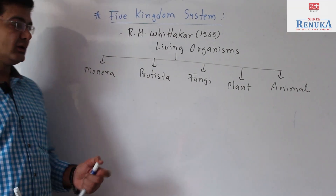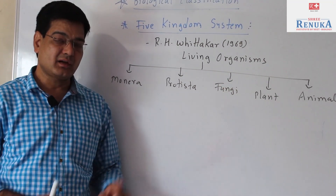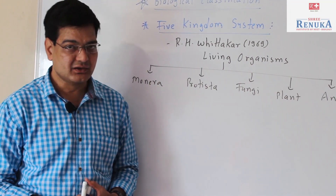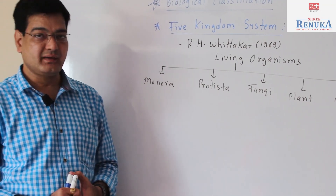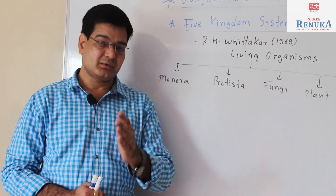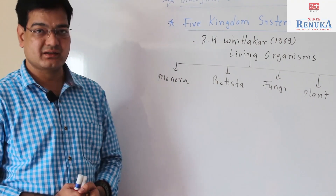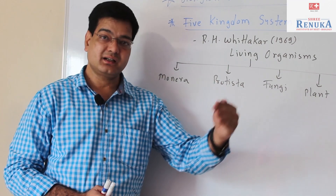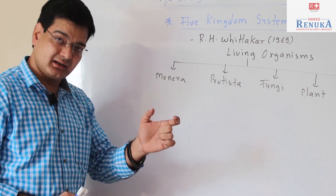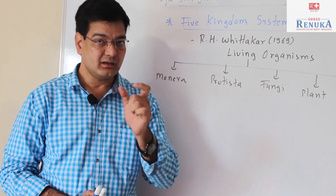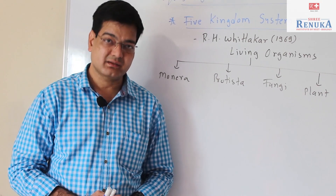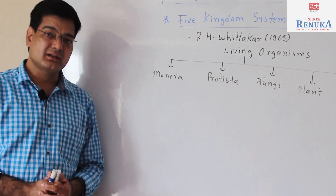Whittaker was the first who classified fungi differently from all other kingdoms. This system of classification is based on phylogenetic classification. It gives information regarding the evolution of living organisms and the interrelationship between organisms — that's why it is called phylogenetic interrelationship. It gives information regarding the genetical evolution of living organisms as well.